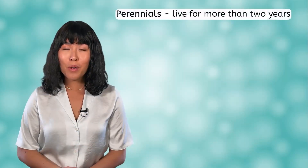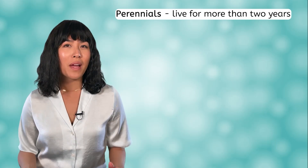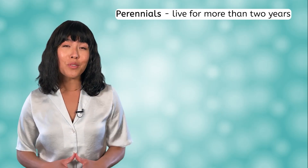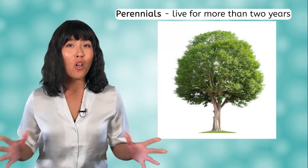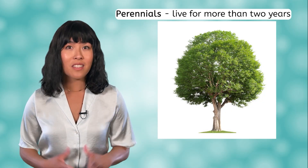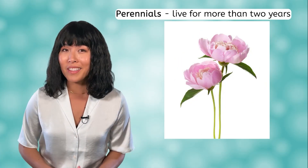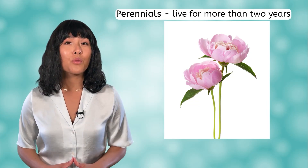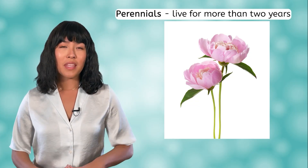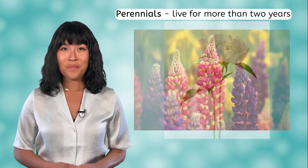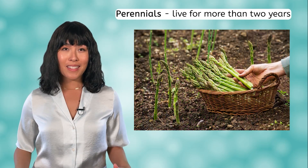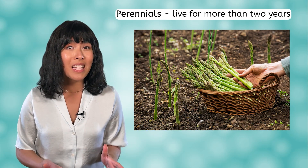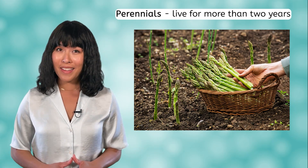The third group of angiosperms are the perennials. Any flowering plants that typically live for more than two years are perennials. Almost all woody plants are perennials, and some herbaceous ones are as well. Herbaceous plants that are perennials often lose their stems in the winter, but they grow back the next year. Lupines and asparagus are herbaceous plants that you could put in a garden and most likely never need to replant.